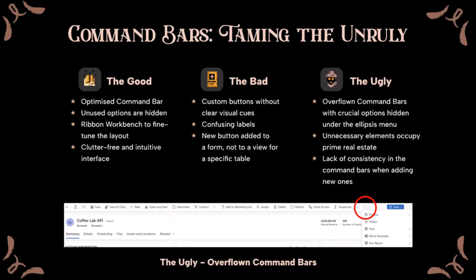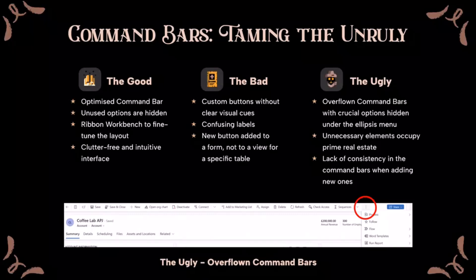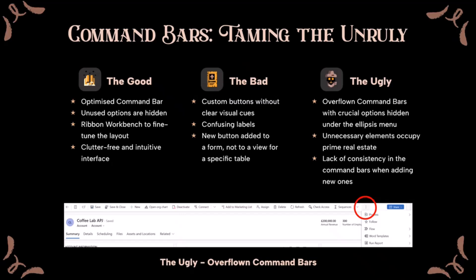For good command bars, always create a clutter-free experience and hide options that are not needed. When adding custom buttons that trigger automation, do not leave users without any progress message — that can confuse them and leave them unsure of the system's responsiveness. It is also ugly to hide key options under the ellipsis while unused buttons take up the main space.